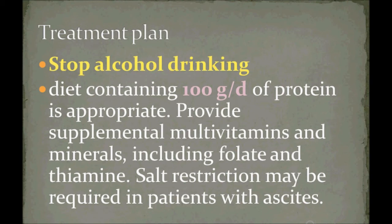In a USMLE vignette, they will give the history of a 50-year-old alcoholic who comes with mild right-sided abdominal pain, nausea, vomiting, or fever. On examination, the liver is mildly tender, and the AST to ALT ratio is increased — first think alcoholic hepatitis.